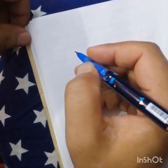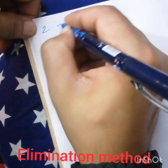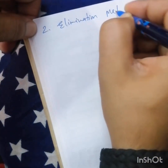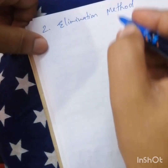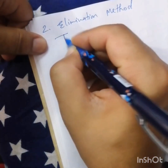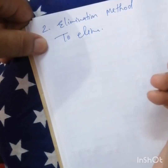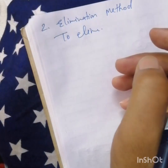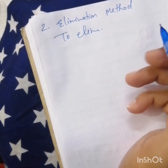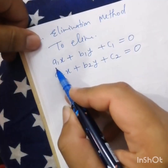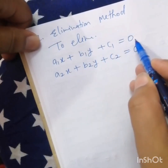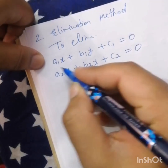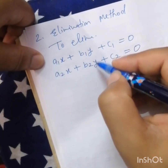The second method is elimination method. The meaning of elimination is to eliminate, meaning to remove. Here we have to remove one variable by making the coefficients equal. The equations are a1x plus b1y plus c1 equals 0 and a2x plus b2y plus c2 equals 0.